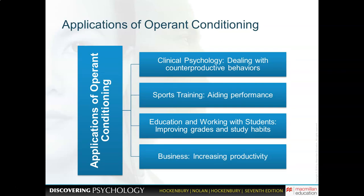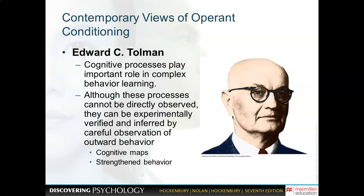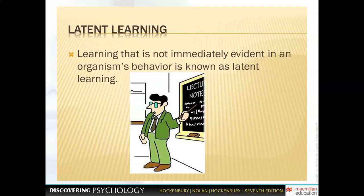Contemporary psychologists are convinced that cognitive processes play a very important role in learning — that we make choices and have specific cognitive processes that contribute to our learning. One example is latent learning — learning that is not immediately evident in an organism's behavior. The type of learning we do in school is usually latent learning, because students learn but their knowledge isn't demonstrated until they have an opportunity to show it.